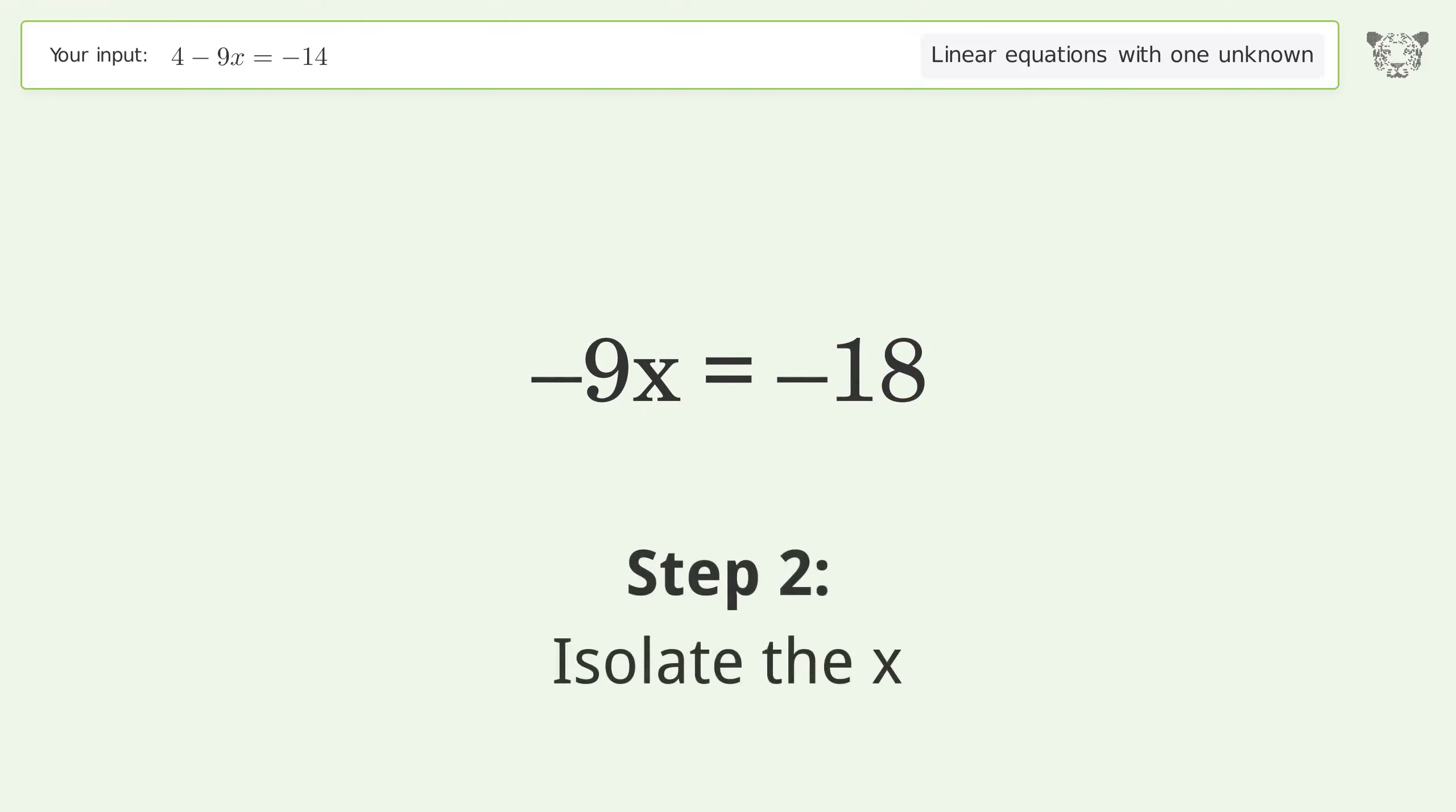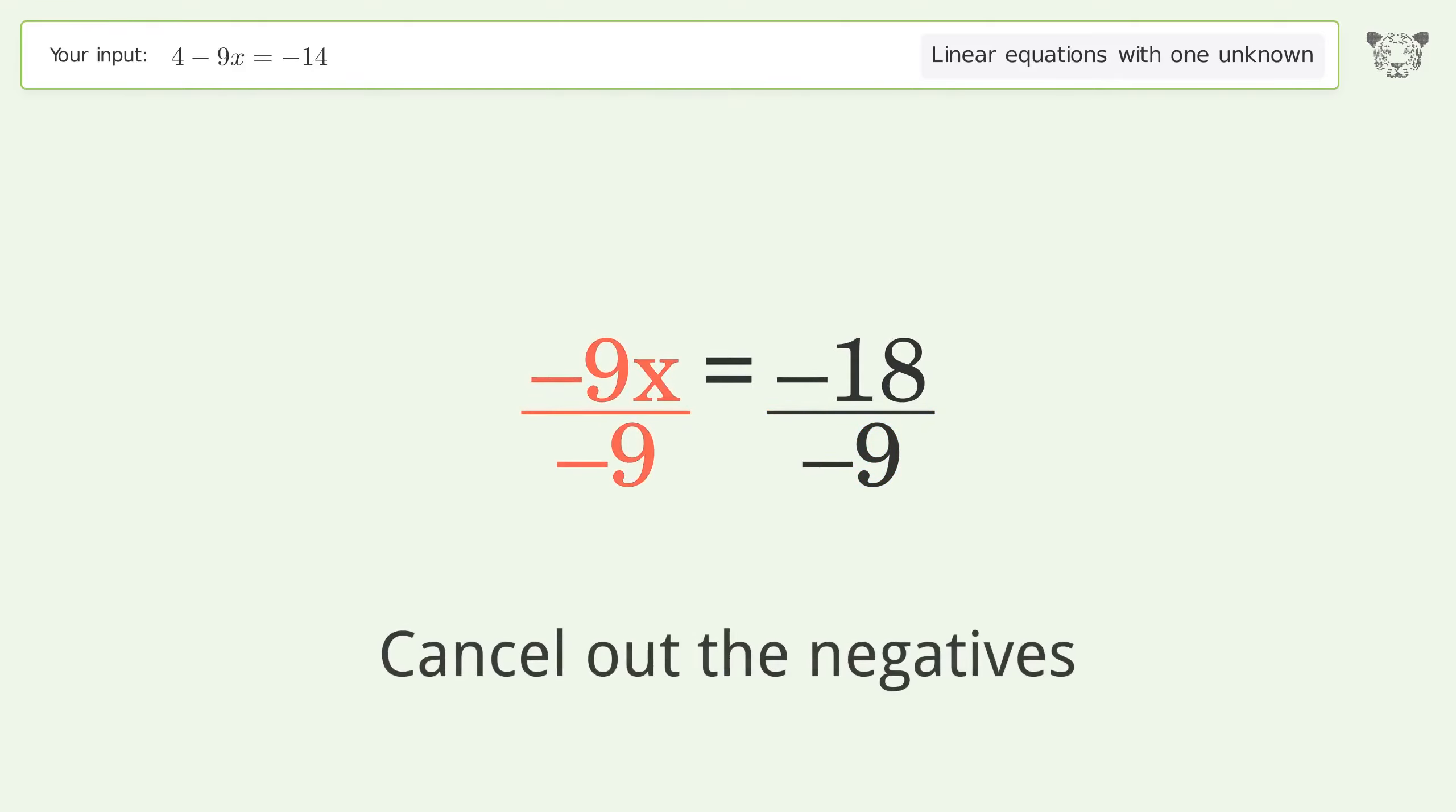Isolate the x. Divide both sides by negative 9. Cancel out the negatives. Simplify the fraction. Cancel out the negatives.